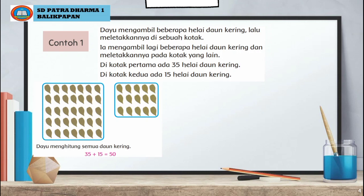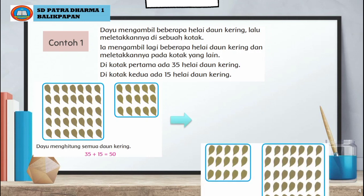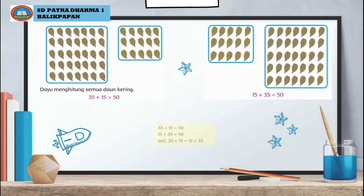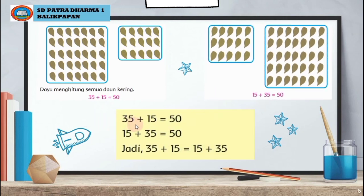Dayu menghitung semua daun kering, yaitu 35 ditambah 15, hasilnya adalah 50. Dayu ingin mengetahui apabila kotaknya ia tukar, apakah hasilnya tetap sama. Ternyata 15 ditambah 35 hasilnya juga 50. Jadi 35 ditambah 15 sama juga dengan 15 ditambah 35.